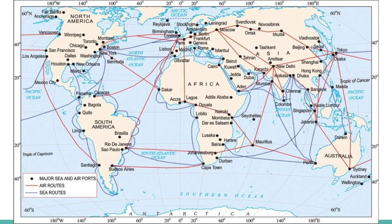The Deccan Peninsula protrudes into the Indian Ocean, helping India establish close contact with West Asia, Africa, and Europe from the western coast, and with South-East and East Asia from the eastern coast. No other country has as long a coastline on the Indian Ocean as India, which underscores India's eminent position in the Indian Ocean.